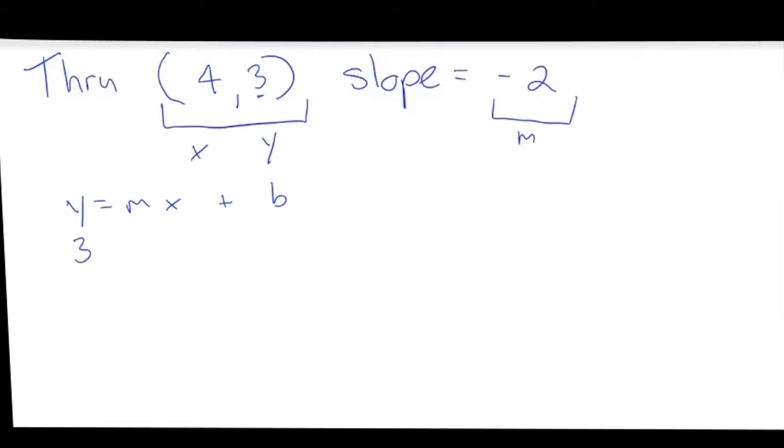So I'll call that 3 equals m is negative 2, so I'll call that negative 2 times x, which is 4, plus b.